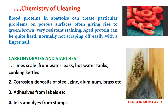Blood protein is most common in abattoirs and slaughterhouses. Blood proteins can create particular problems on porous surfaces, often giving rise to green or brown very resistant staining. Aged protein can be quite hard and normally will not scrape off easily with a fingernail. Blood deposits and the resulting protein staining can be very difficult to remove and should be taken care of carefully.